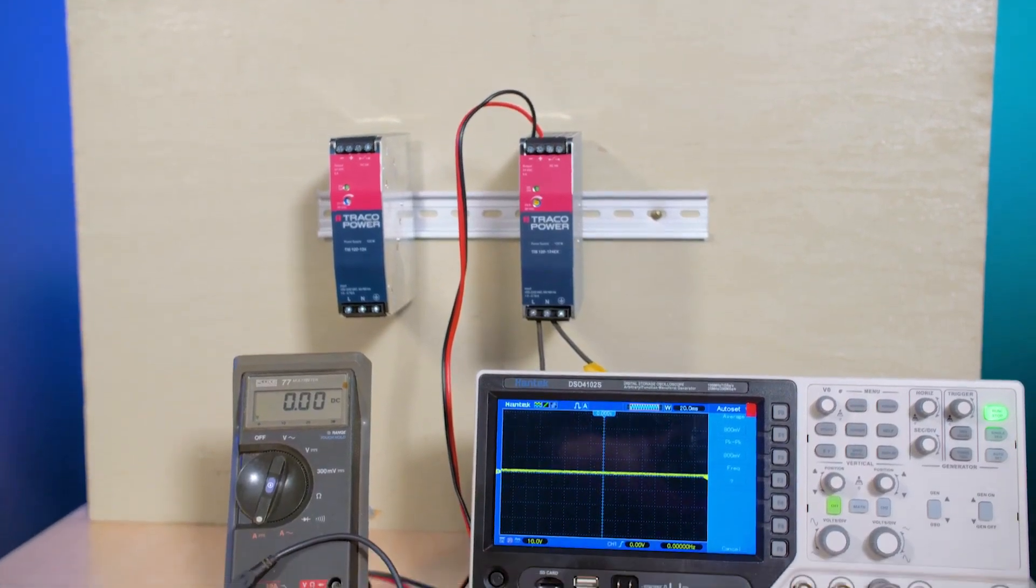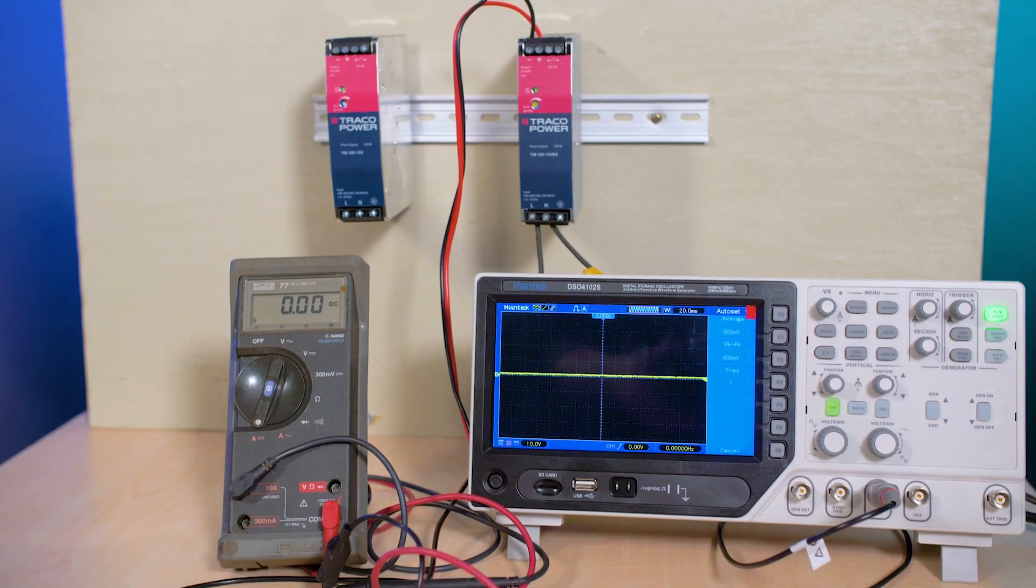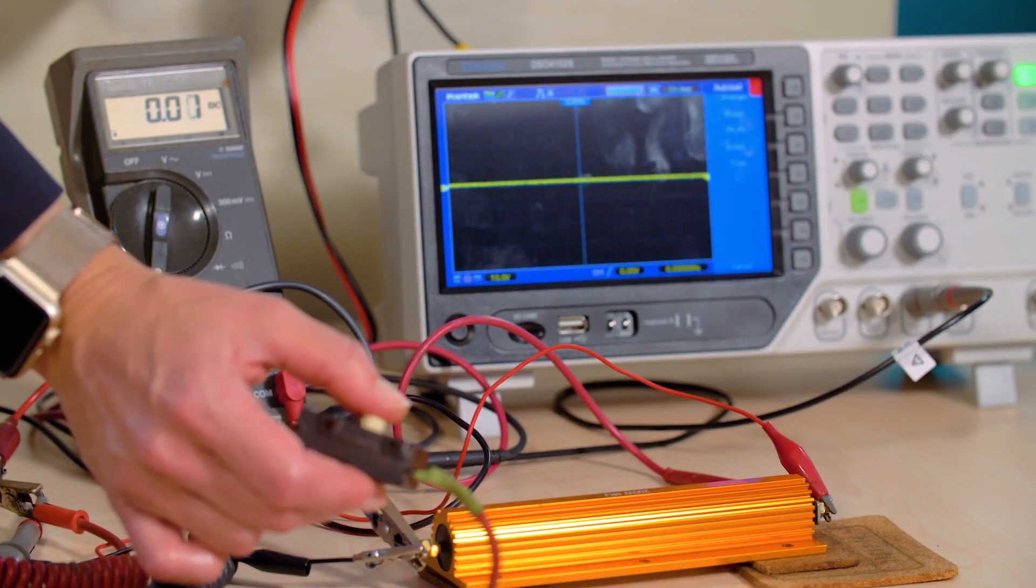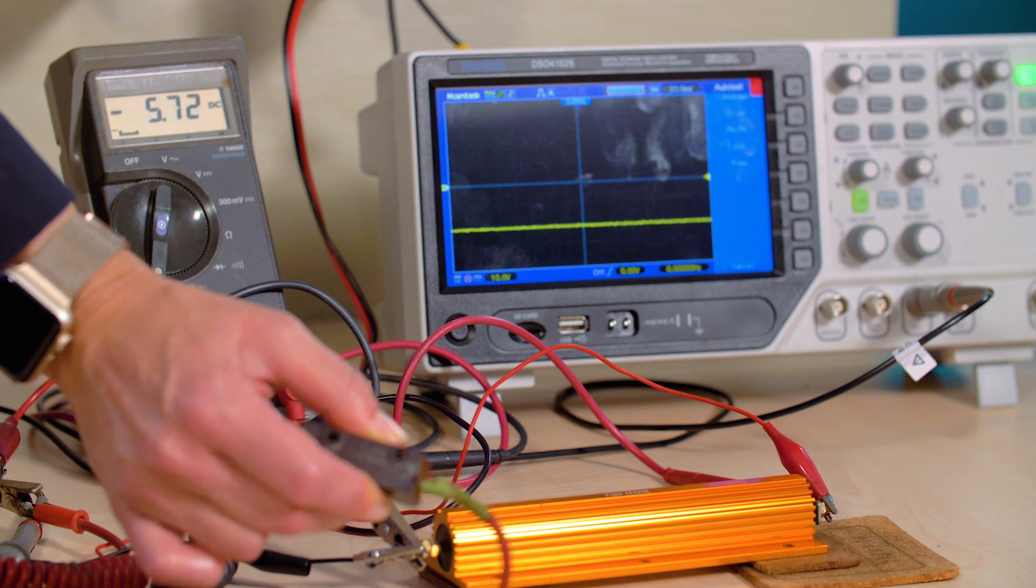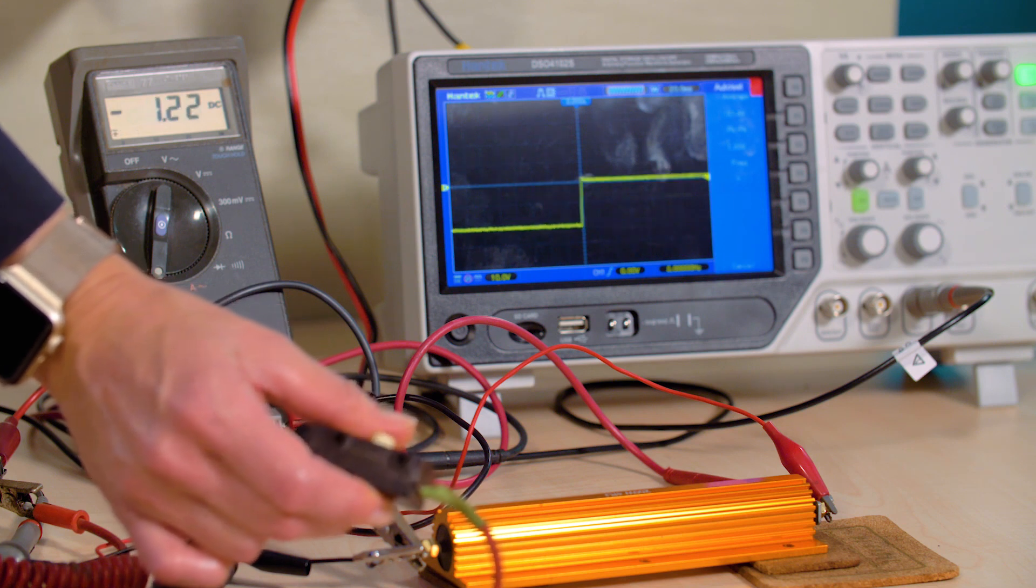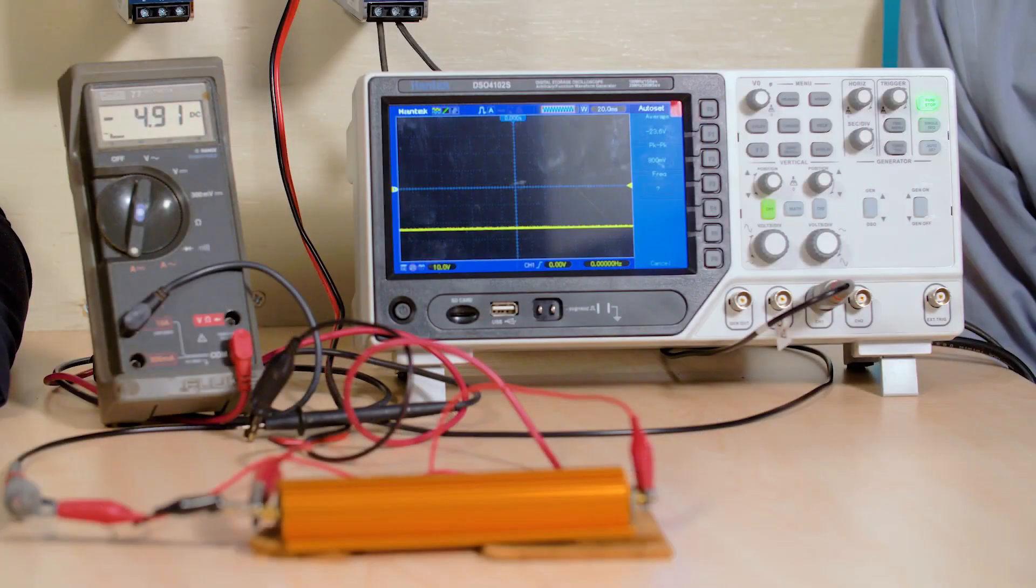To illustrate what that means we've hooked up a dummy load to one supply and we put a current meter in the output line that shows we're drawing about five amps and our oscilloscope display is showing a 24 volt output. So you can see the supply is putting out a power level close to its 120 watt maximum.